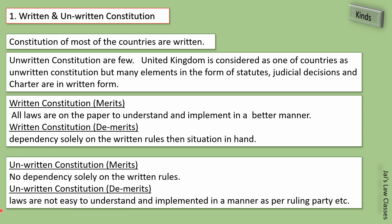Merits of unwritten constitution: no dependency on written rules — you are not fully dependent on what is written; you can handle the situation yourself since nothing is written in a rigid manner. Demerits of unwritten constitution: laws are not easy to understand and can be implemented as per the ruling party's preferences, since nothing is in written form. The ruling government can implement rules as they wish because nothing is written down. So having a written constitution is very important.